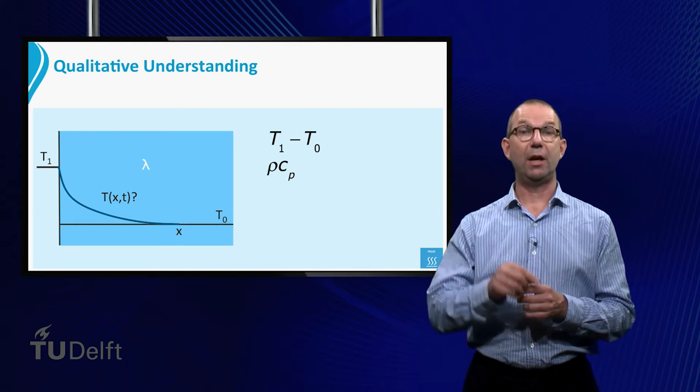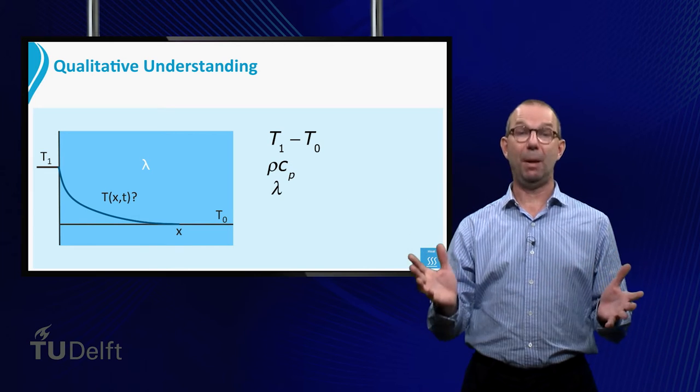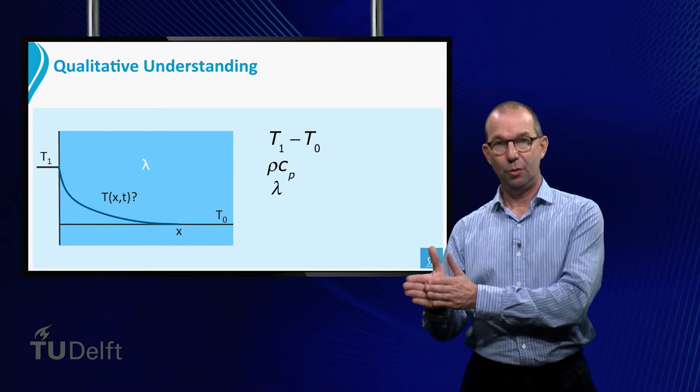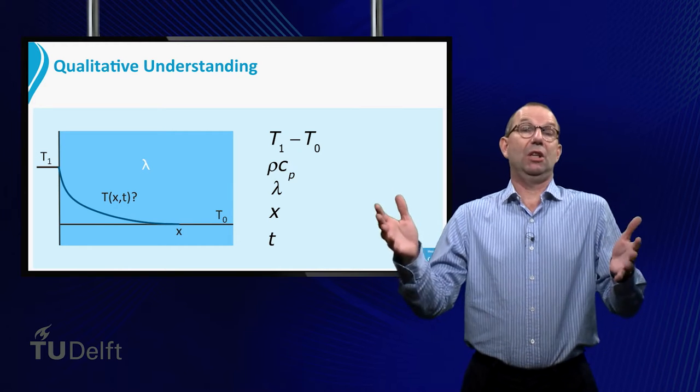The heat transport is via conduction, thus from Fourier's law we know that lambda plays a role. Finally, the distance from the left hot interface must play a role, as well as time T itself.